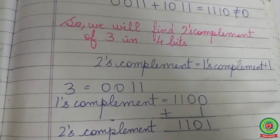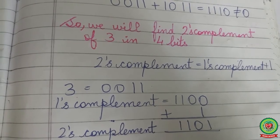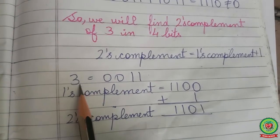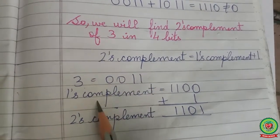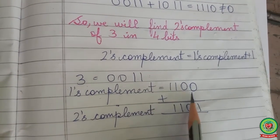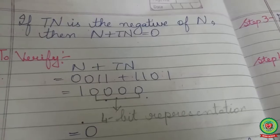We had done earlier, two's complement equals one's complement plus 1. So here the value of 3 is 0011. Its one's complement is 1100. Plus 1 equals 1101.